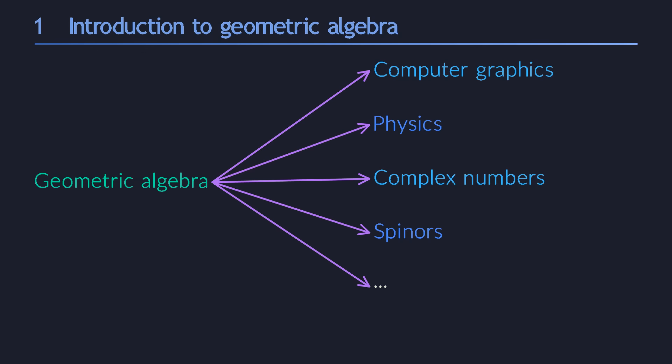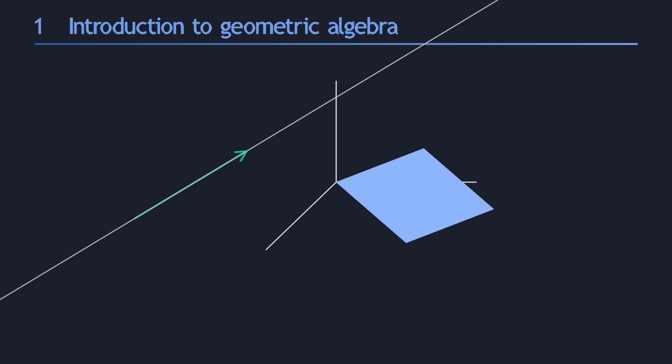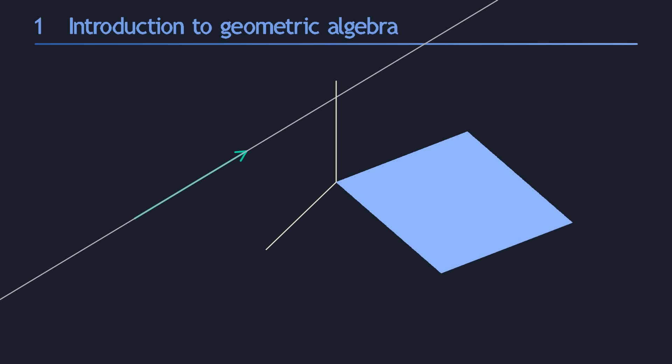If I had to summarize geometric algebra in only a few sentences, it would probably go something like this. We will construct and discover a set of tools that allows us to manipulate vectors, but also lines and planes and volumes and other geometric shapes and even entire spaces.